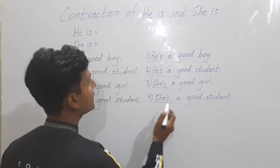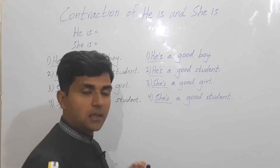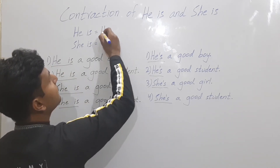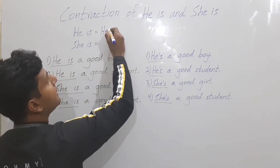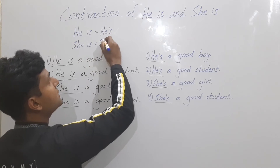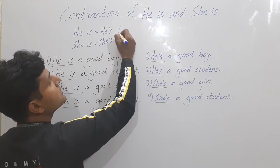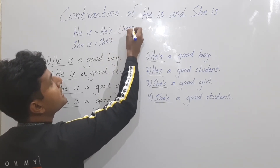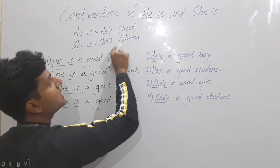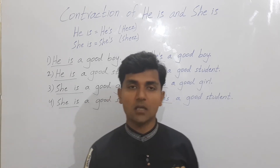We change 'he is' into 'he's' and 'she is' into 'she's.' Here's how we write it: for 'he' — write H-E, then apostrophe, then S, giving 'he's.' For 'she' — write S-H-E, then apostrophe S, giving 'she's.' So 'he is' becomes 'he's' and 'she is' becomes 'she's'.